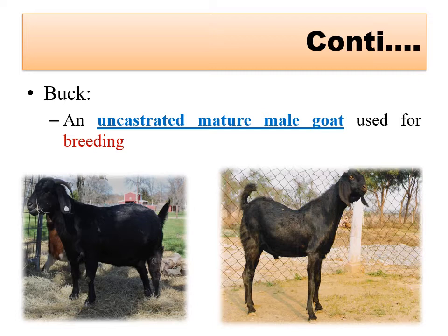The market weight for sheep and goat is 30 to 40 kg - that is the weight at which the animal is sold for meat. In castrated males, this 30 to 40 kg market weight is achieved earlier.